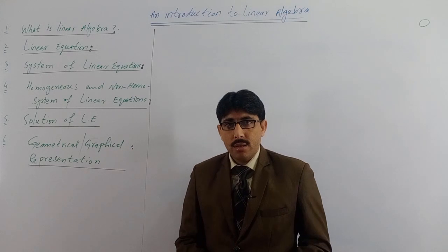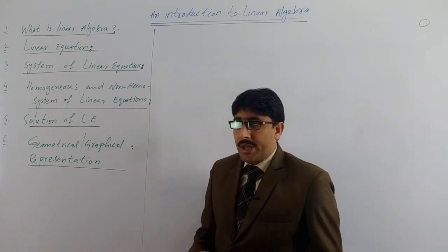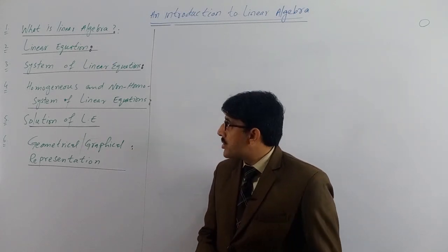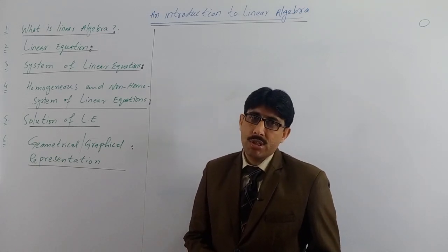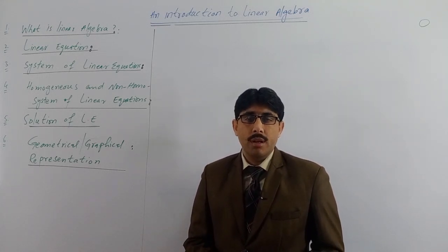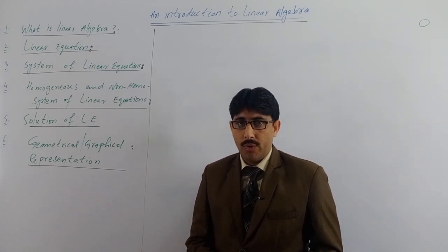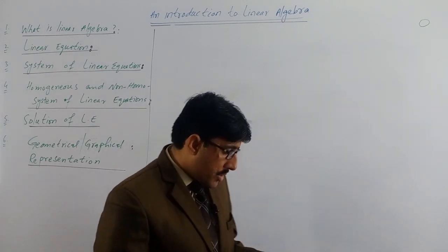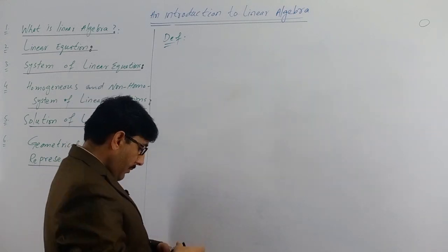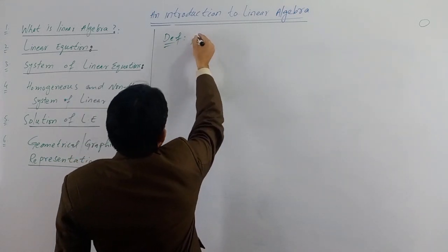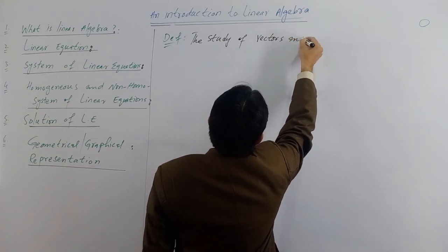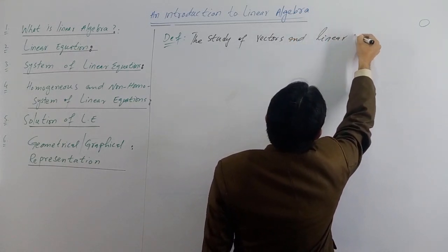Today's lecture contents: what is linear algebra, what is a linear equation, what is a system of linear equations, what is homogeneous and non-homogeneous system of linear equations, solution to the linear equation and to the system of linear equations, and what is the geometrical and graphical meaning and representation of the solution of linear equations and system of linear equations. The definition of linear algebra is: the study of vectors and linear functions.